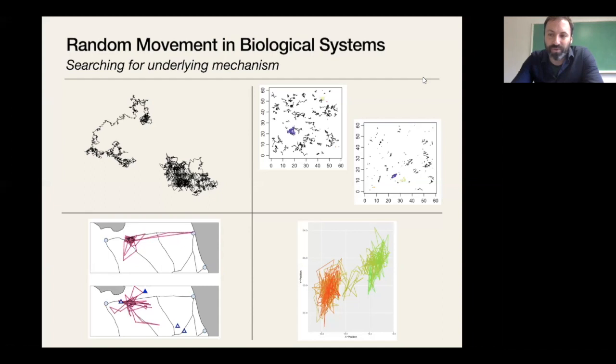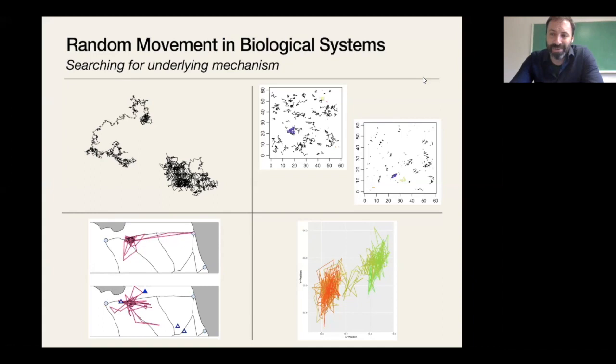During my postdoc I was introduced to interesting applications for random movements of different types of particles in biological systems. When I got to Florida, I met people in the ecology department who said they had data sets with panthers and pythons and jackals. I started working on that, assuming everything I did for micro-particles would translate — and of course none of it did. But these have kept me busy over the years, and I'm going to talk mostly about the micro-particle stuff today.